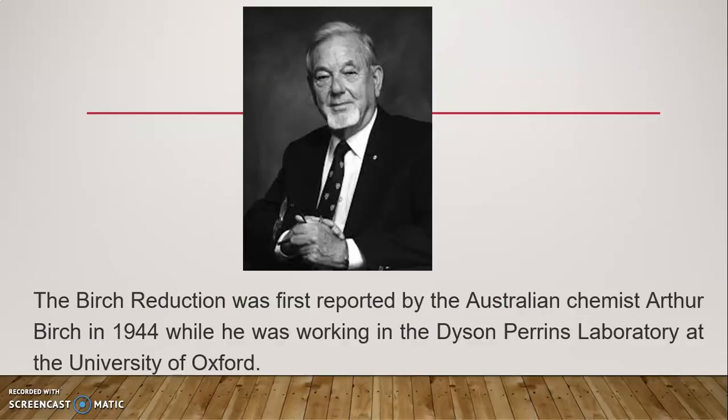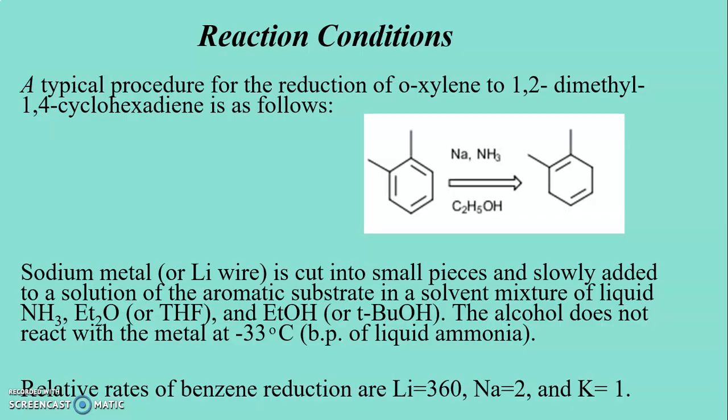The Birch Reduction was first reported by the Australian chemist Arthur Birch in 1944 while he was working in the Dyson Perrins Laboratory at the University of Oxford.